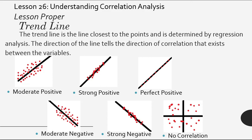How about this one? Aligned with the trend line, but negative direction. Therefore, we can say that this is perfect negative. So we've now visualized correlation analysis.